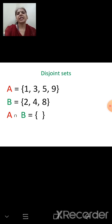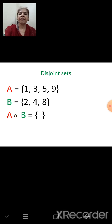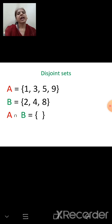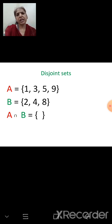Disjoint sets: as the name indicates, there is no common element between the two sets. For example, A = {1, 3, 5, 9} and B = {2, 4, 8} — there are no common elements, so A ∩ B is the empty set (φ).